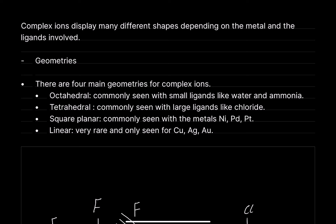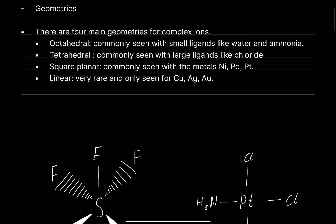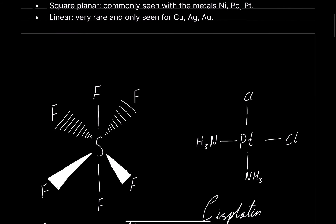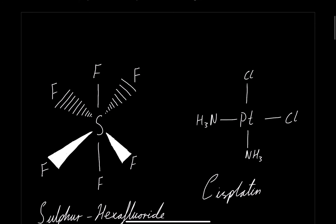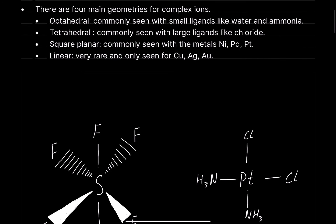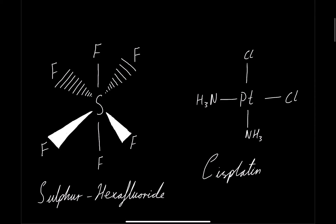The first one is square planar. In terms of square planar, there's one type of complex ion that you should know about, and it's the one called cisplatin. If you do A-level biology, you'd know about cisplatin — and if you don't, you should get to know it when you come to do DNA. Cisplatin is an anti-cancer drug.